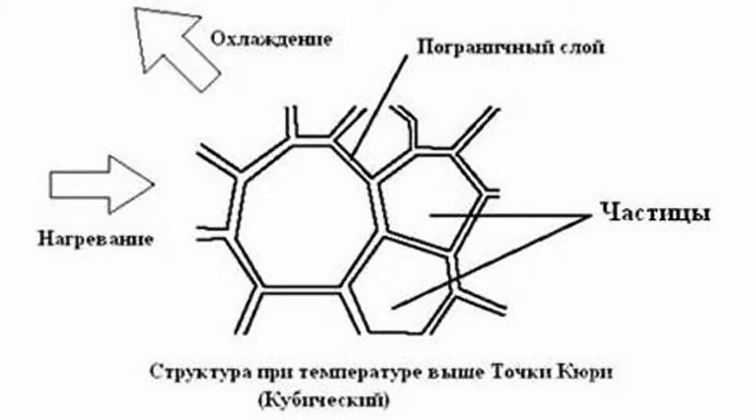When barium titanate is cooled, its crystal structure turns from cubic to rectangular. Segments along the C axis and along other axes are reduced by about 1%. Spontaneous polarization and domain walls reappear, and particles are distorted from external effects.